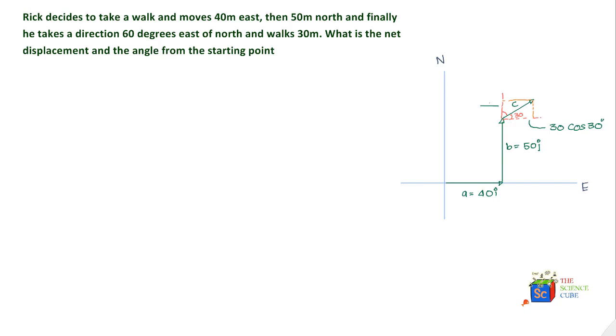Let's put each of the three vectors over here. Vector A is equal to 40 I, vector B is equal to 50 J, and vector C is equal to 30 cos 30, which is the value of vector C on the horizontal axis, and therefore we multiply it with unit vector I, plus 30 sine 30 times J.